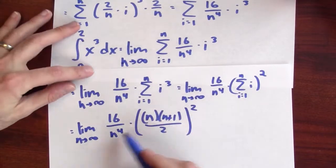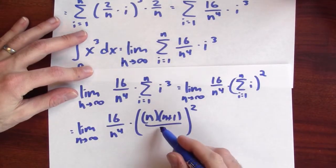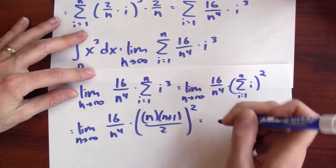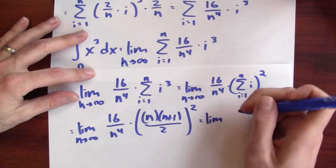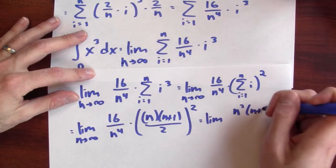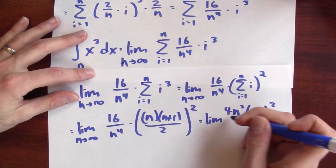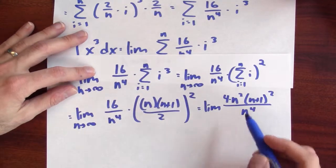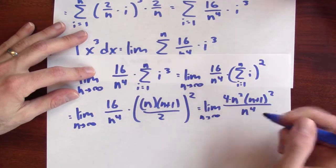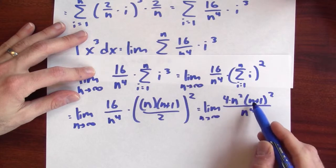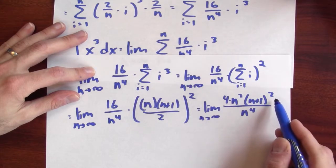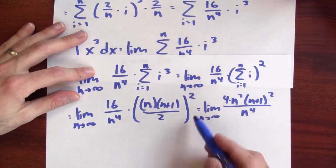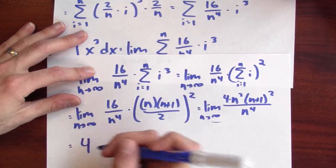Now I've got to figure out what this is. Well, I can factor out 1 over 2 squared and that'll cancel part of the 16. So this is the limit of n squared times n plus 1 squared times 4 over n to the 4th. And this ends up being n squared times n squared plus lower order terms. So the biggest term here is 4 n to the 4th over n to the 4th. So this limit ends up being equal to 4.